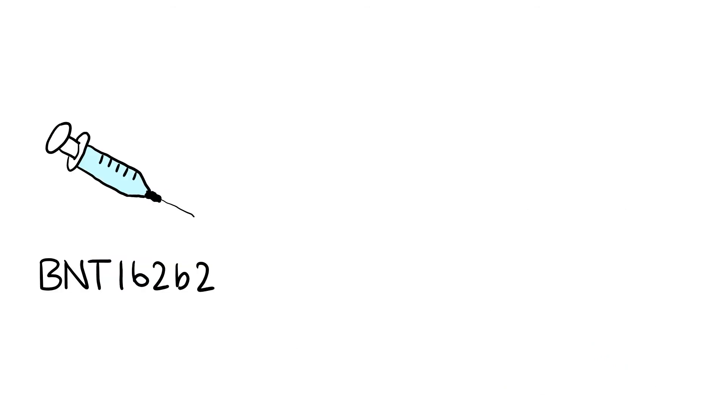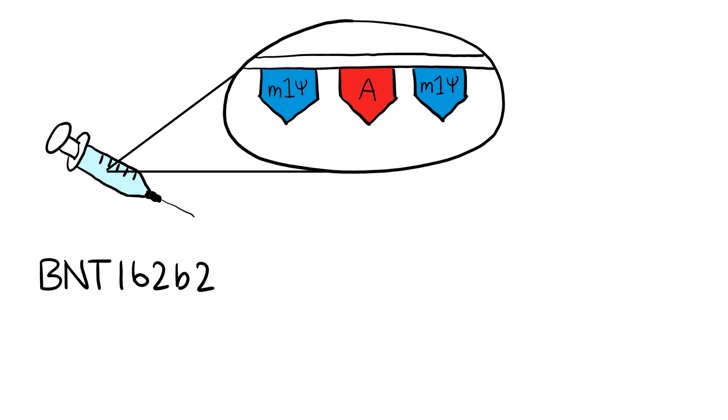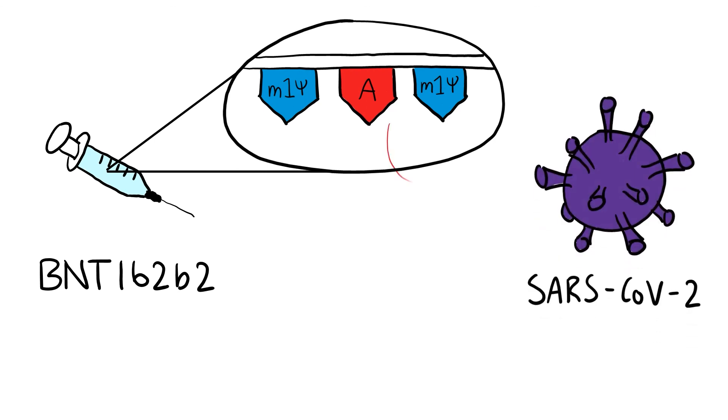These vaccines contain N1-methyl-pseudouridine modified mRNA encoding for a pre-fusion spike glycoprotein, which stimulates the immune response, alongside lipid nanoparticles to protect the mRNA from degradation and enable their delivery into cells without toxicity.